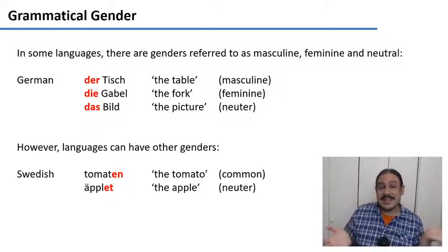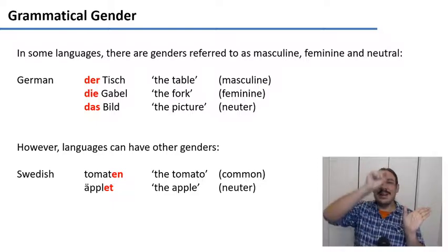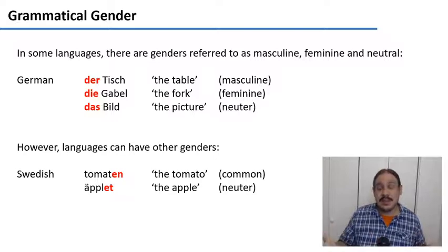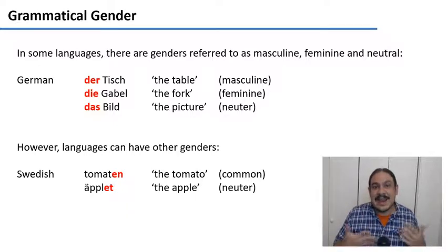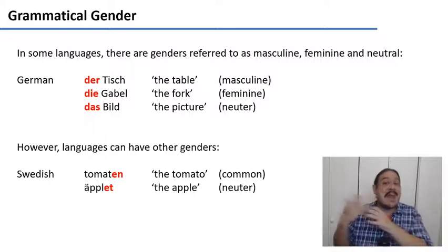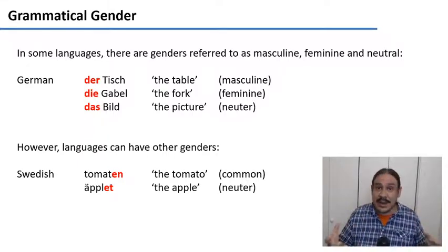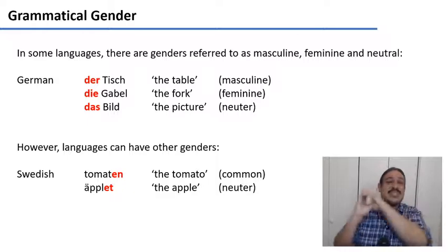In many languages you might have studied, words are arbitrarily assigned to a gender. For example, in German you can have 'der Tisch' (the table), 'die Gabel' (the fork), or 'das Bild' (the picture) — masculine, feminine, and neuter. There's nothing that makes a table inherently masculine or a fork inherently feminine. These genders are assigned in an arbitrary way, which is what makes them so difficult to memorize. There's really no association between a word and the gender it gets.